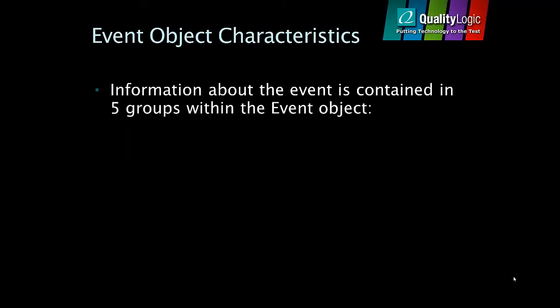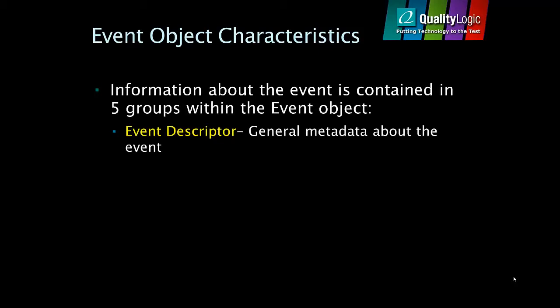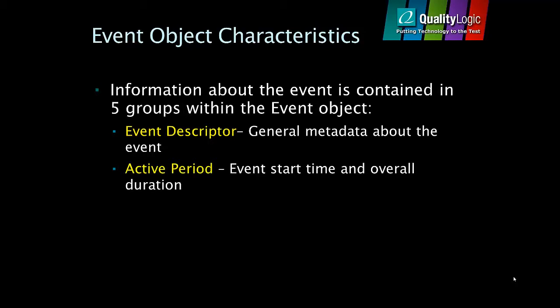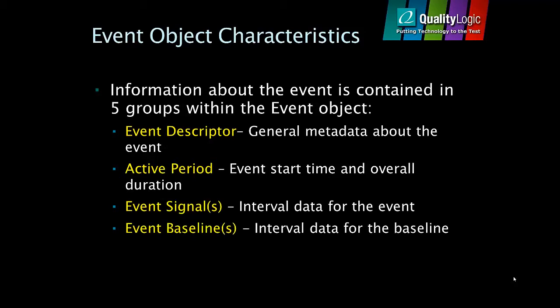Information about the event is contained in five groups within the event object. The event descriptor contains metadata about the event such as the DR program name and a unique ID to track the event. The active period defines the overall event timing characteristics such as the start time and the duration of the event. The event signals themselves contain interval data with actionable values. Event baselines provide additional historical information that the VEN can use to help make decisions about participating in the event. And finally, targeting information conveys the intended recipient of the event, such as all water pumps in a particular geographic area.